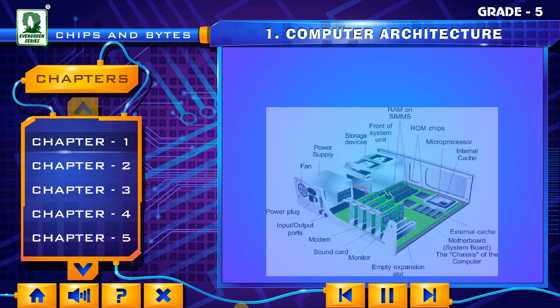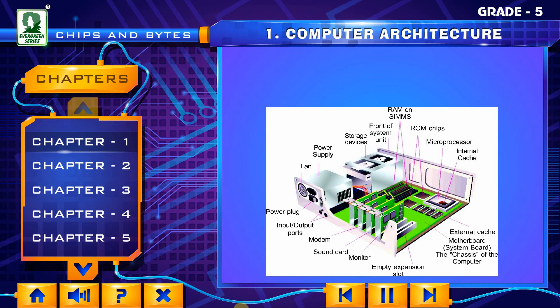This is how it looks from inside. We have RAM, ROM chips, microprocessor, internal cache, external cache, motherboard or system board, empty expansion slot, and monitor.